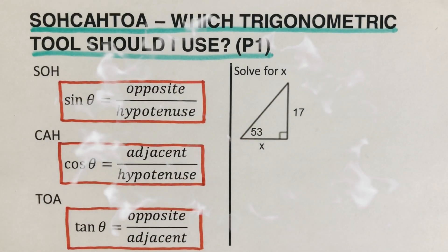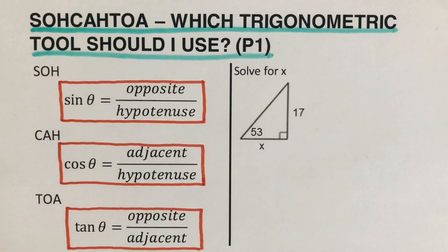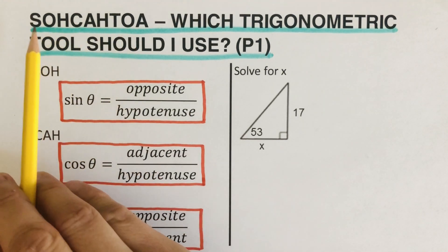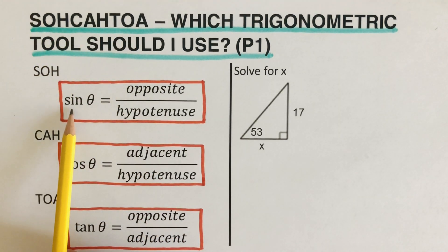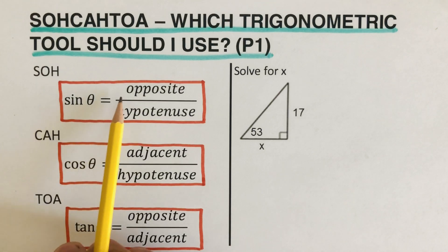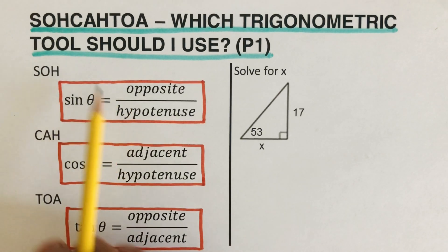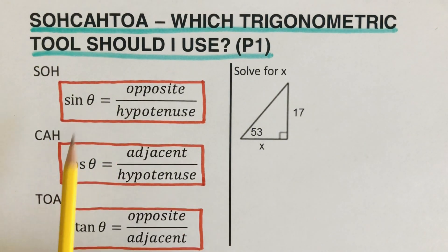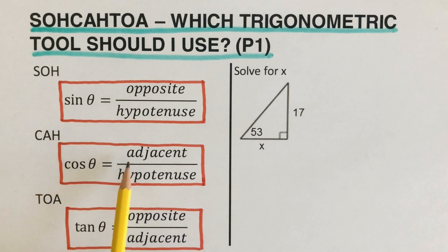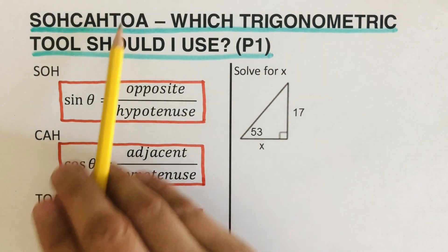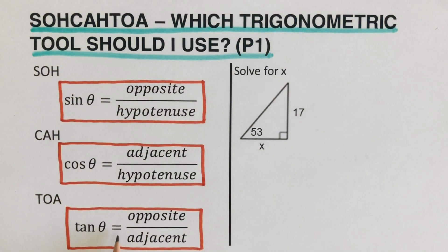Hello everyone! In this video, we are going to determine the length of the missing side of a triangle using SOH-CAH-TOA. SOH stands for sine is equal to opposite over hypotenuse. CAH stands for cosine is equal to adjacent over hypotenuse. And TOA stands for tangent is equal to opposite over adjacent.